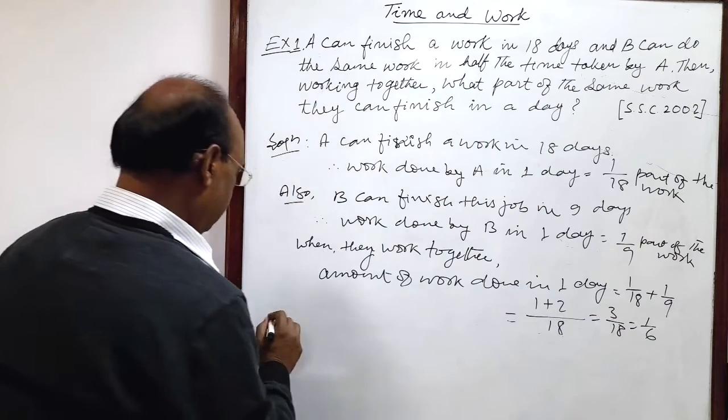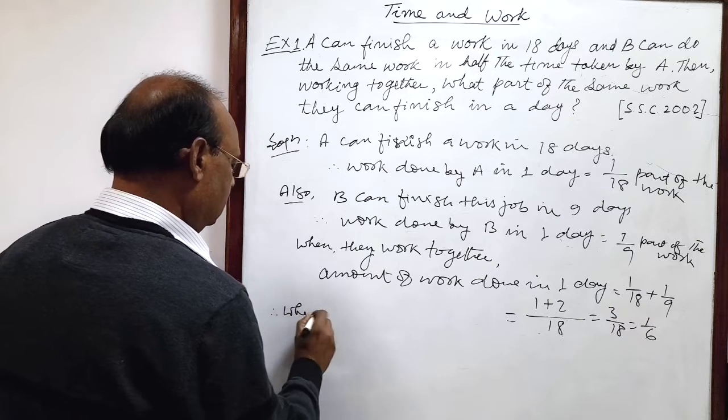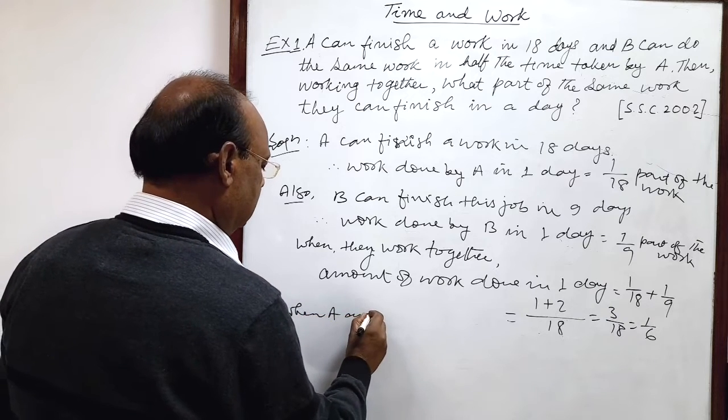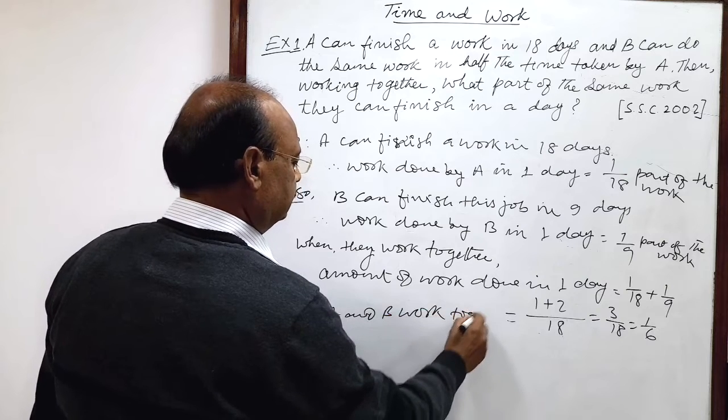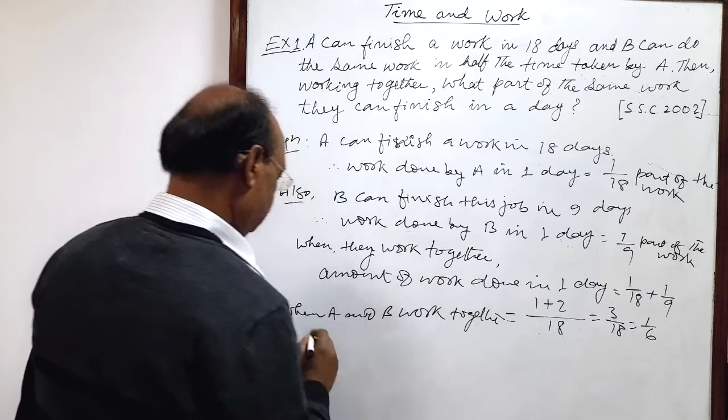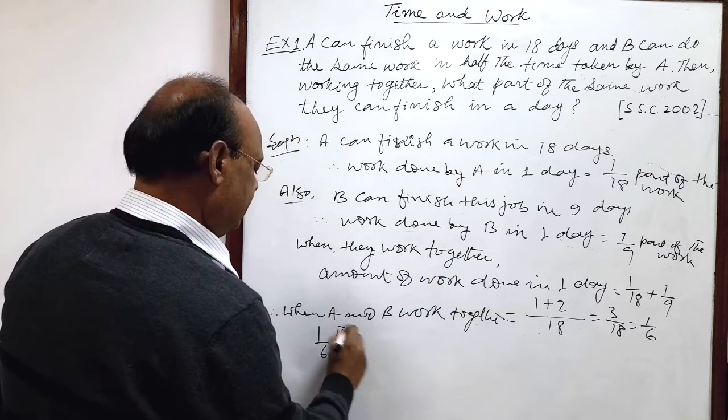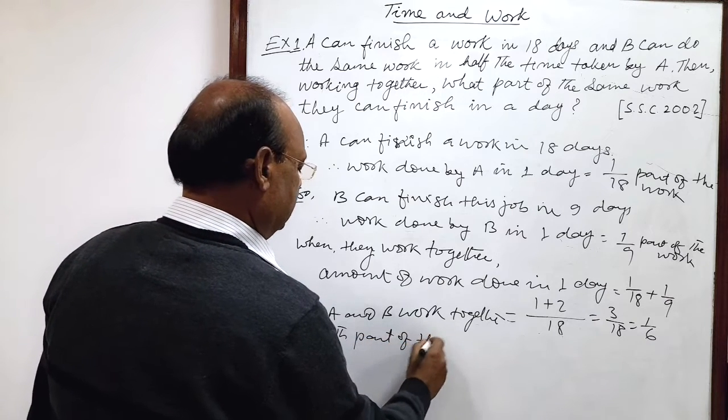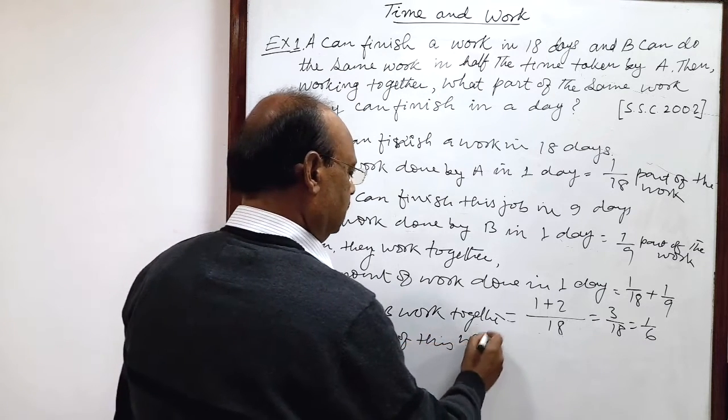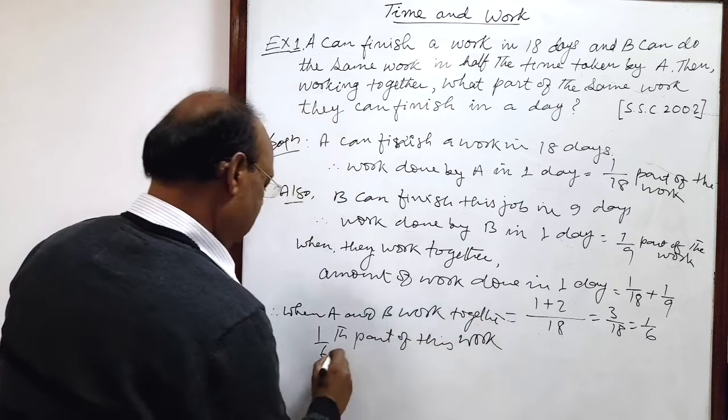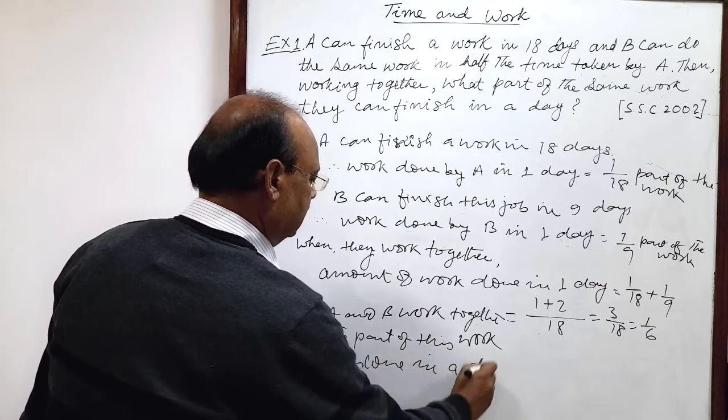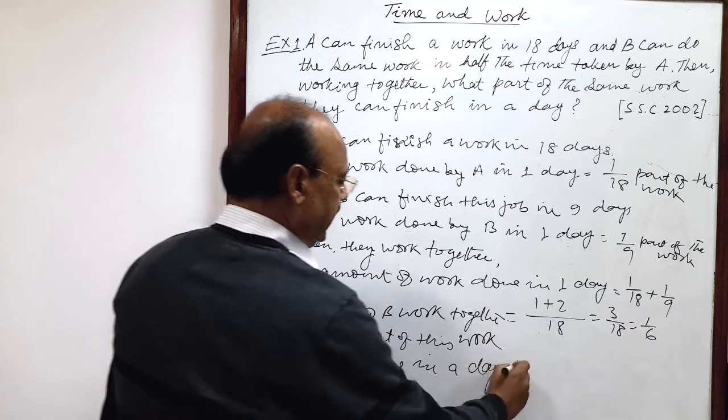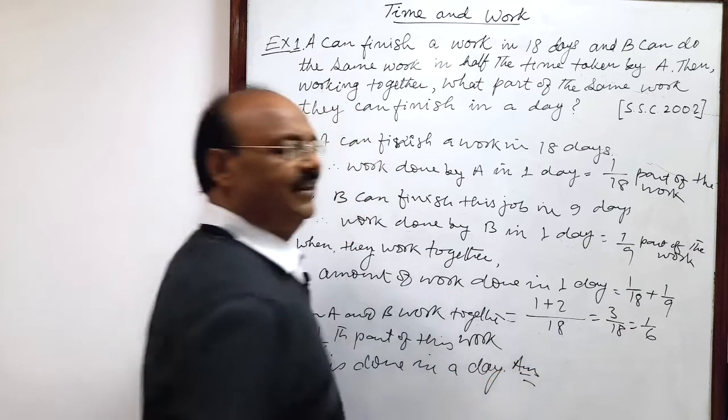This is the answer. So therefore, when A and B work together, 1 by 6 part of this work is done in a day. So we have to conclude here. This is the answer.